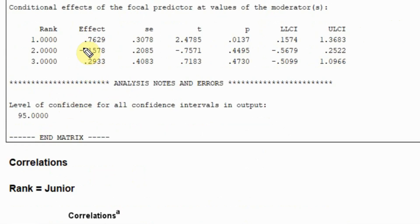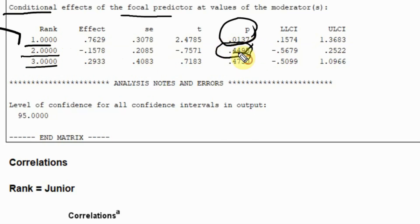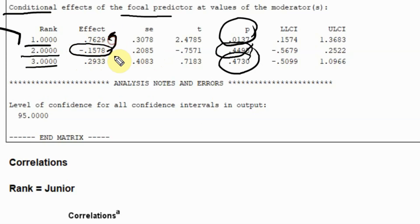Now look at the conditional effects of the focal predictor at values of the moderator. When job rank is junior, the impact of type of bank is significant. When job rank is middle or senior, it is insignificant. When it is middle, it shows low reliability in comparison to junior level; and when it is senior, although they have better reliability, the difference is insignificant.